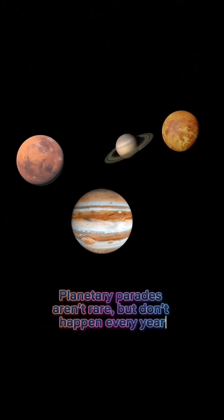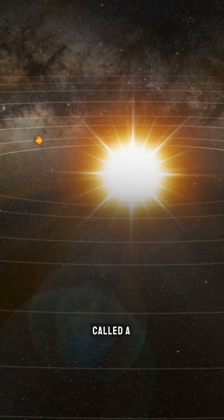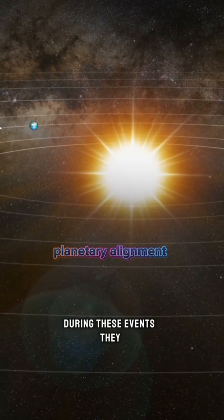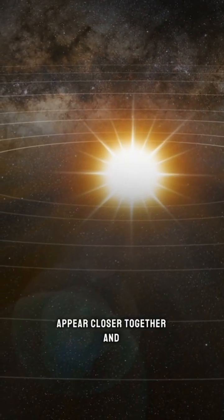So-called planetary parades aren't super rare, but they don't happen every year. These events are often called a planetary alignment. During these events, they appear closer together and visible from Earth.